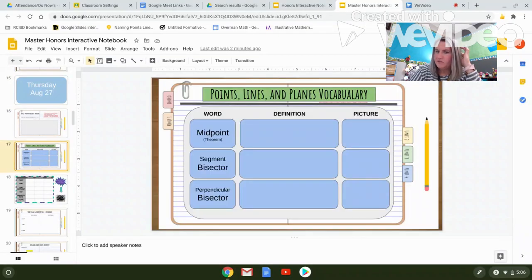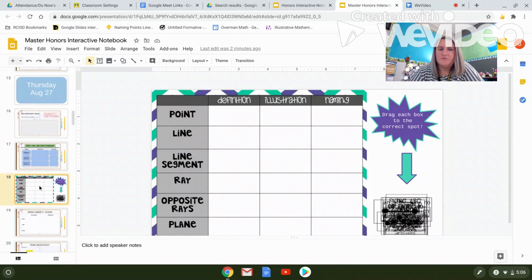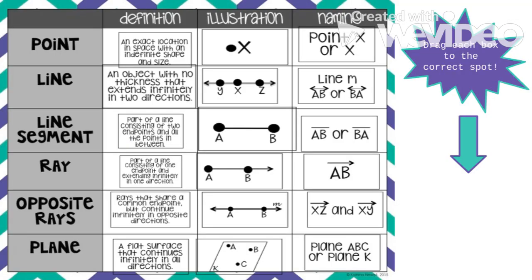I moved things around a little bit and so we already discussed midpoint, segment bisector and perpendicular bisector on the last video. Next what I'm expecting you guys to do is go ahead and drag each one of these into the correct spot. See if you can figure out what a point, a line, a line segment, a ray, opposite rays, and a plane look like. Here is a finished product so check your answers.